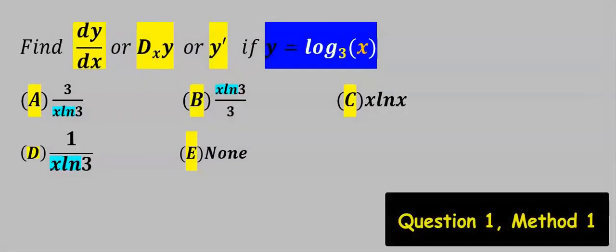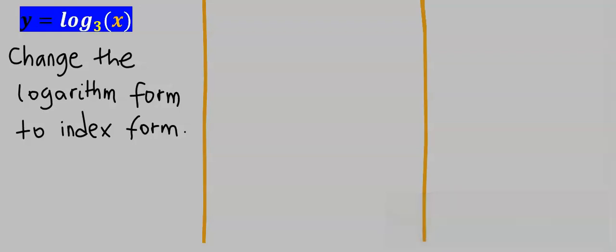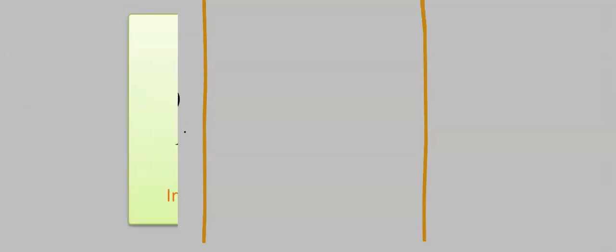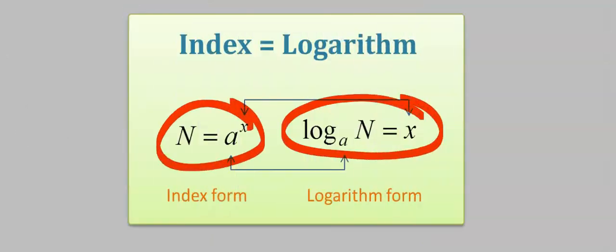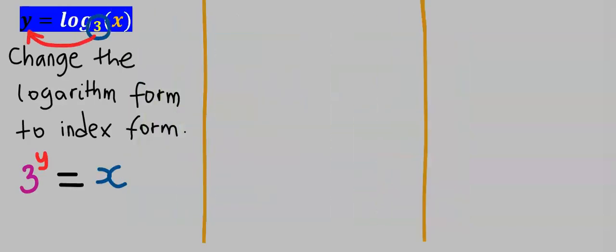Next, let's solve this problem. Step number 1: change the log form to index form. According to this rule, the base will raise y up, and the log will cancel out, leaving x isolated on this side.